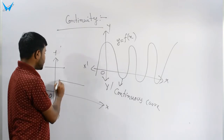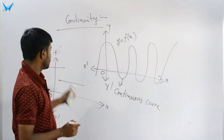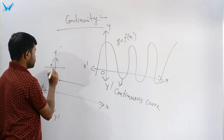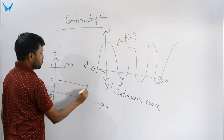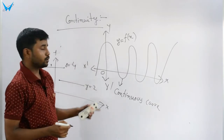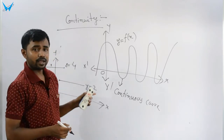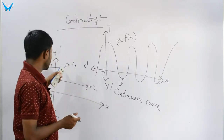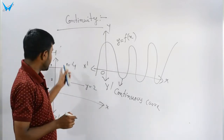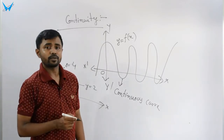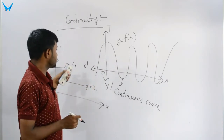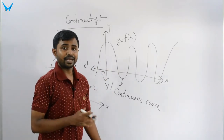I will draw a del graph. Suppose the del graph goes from 2 to 4 — it means y equal to 2 and y equal to 4. So the del graph has a break; it is not a continuous graph. This is the continuous concept — it is a mathematical concept.